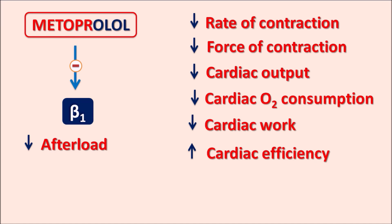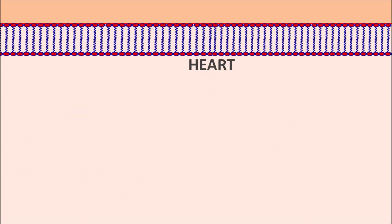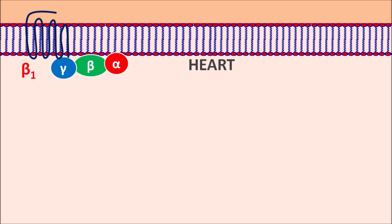Because of decreased afterload and somewhat decreased preload, metoprolol can reduce blood pressure, which is why it is used as an antihypertensive agent. These actions are mainly attributed to its action on beta-1 receptors. Beta-1 receptors on the heart are G protein-coupled receptors and serve as receptors for catecholamines. When catecholamines like norepinephrine or epinephrine bind to these beta-1 receptors, they stimulate the heart.